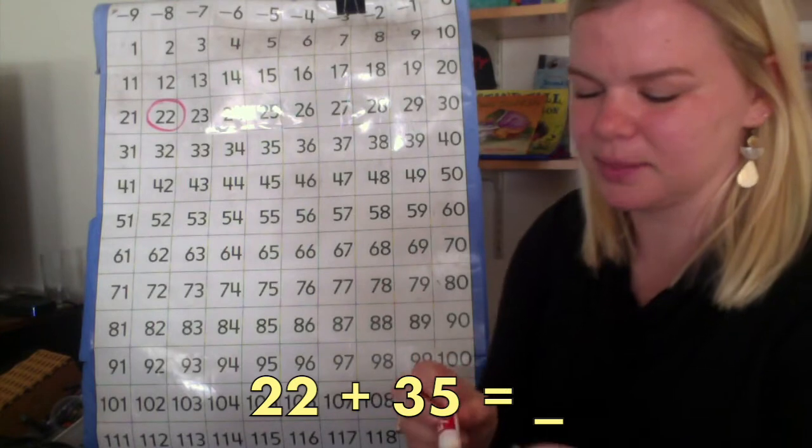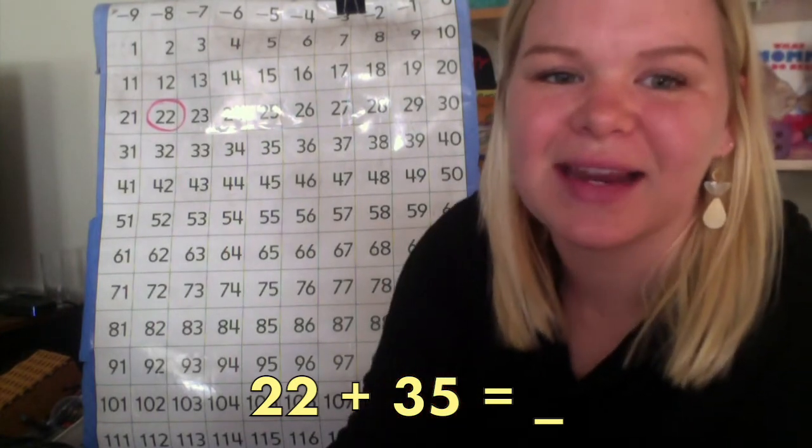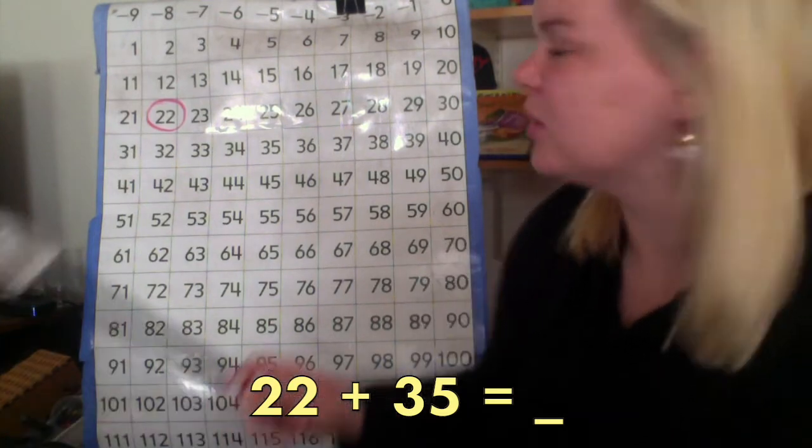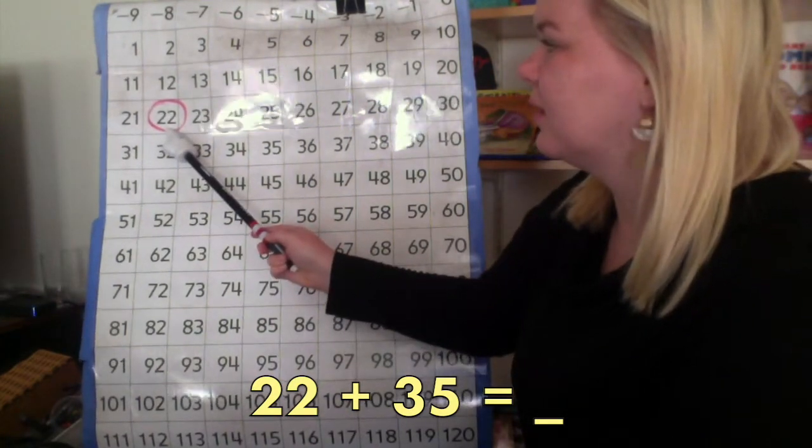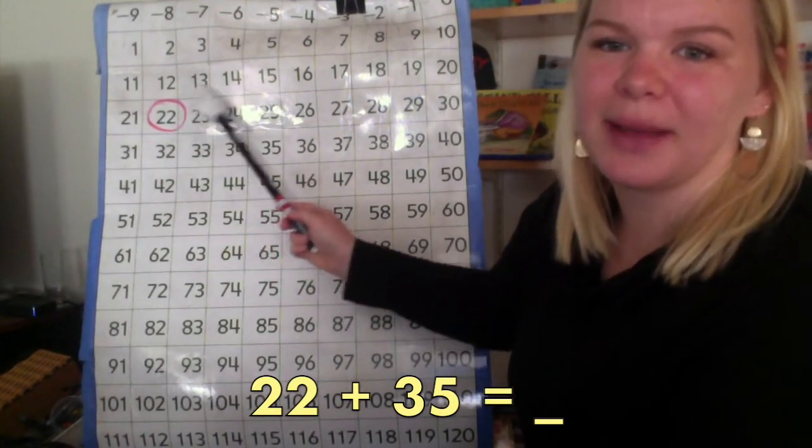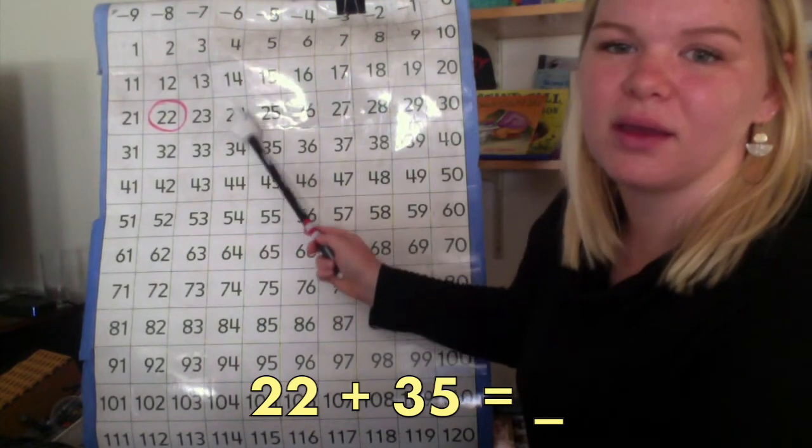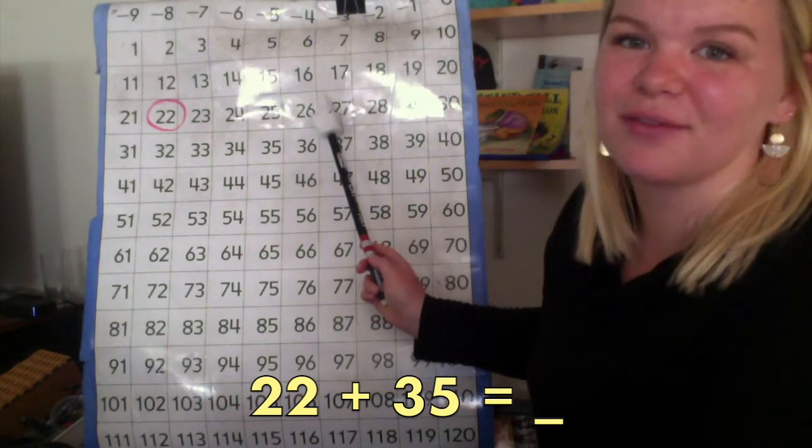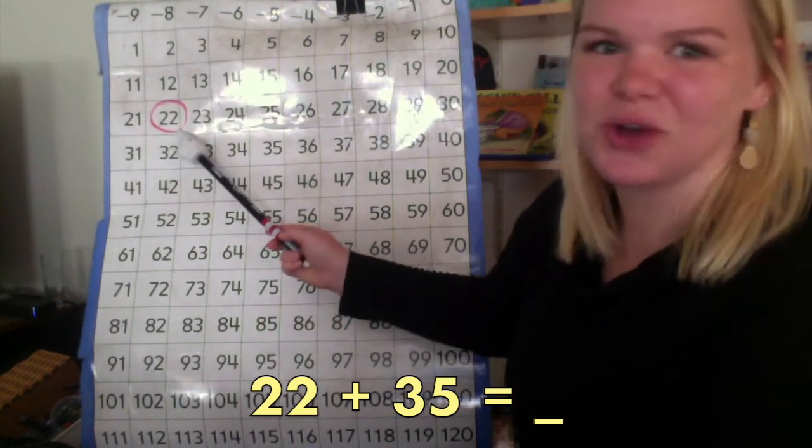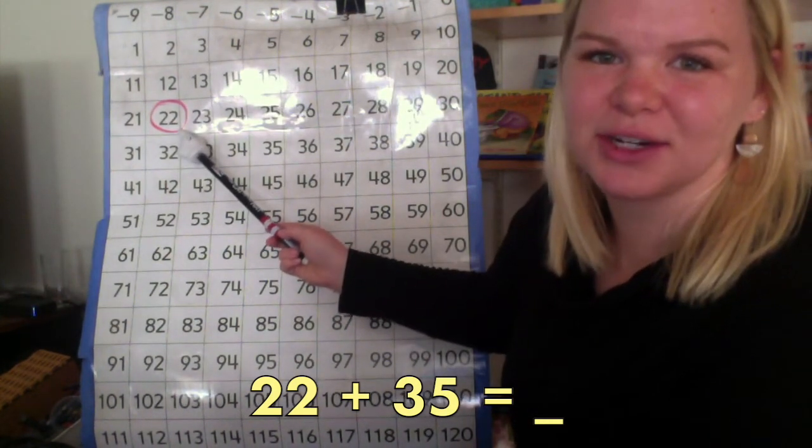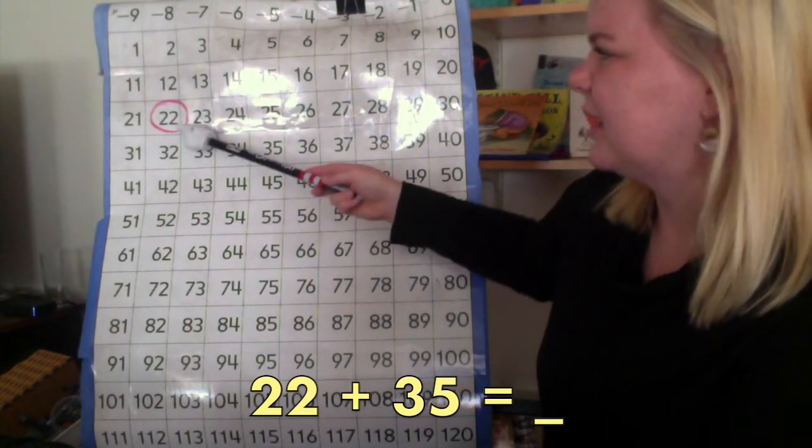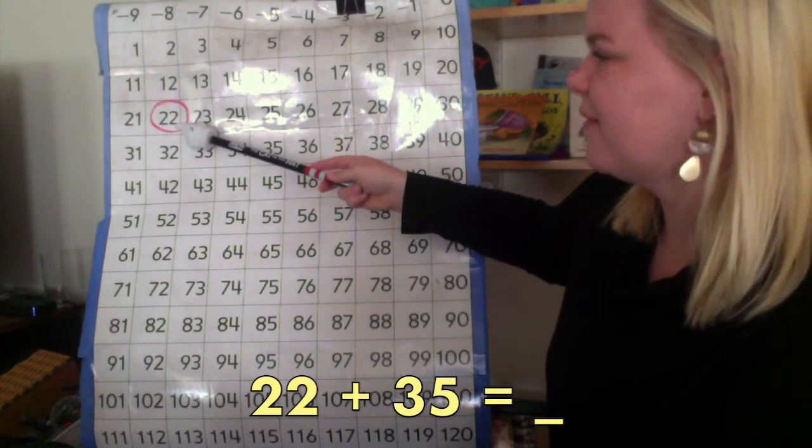Now that I found the number 22, I need to count up 35. Now, we could do that the long way, like I showed you, by counting up 1. We would have to do that all the way up to 35. But, let's try the shortcut that we just learned.